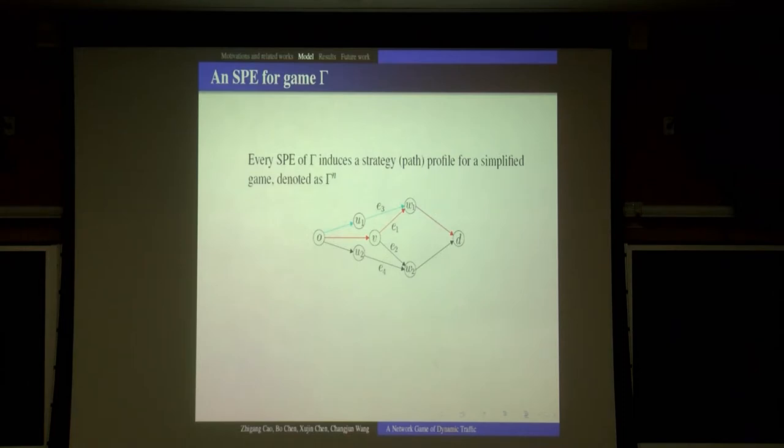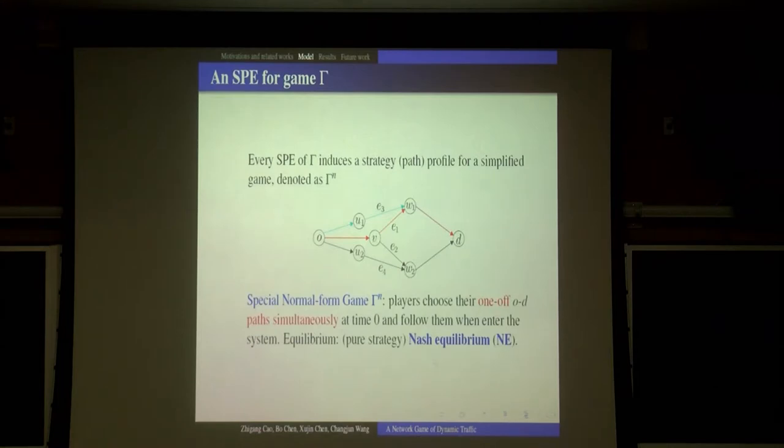Even though the SPE strategy can be quite complex, finally they will induce a path profile. So we also consider a very simplified normal form game, Gamma N. In this game, all players will choose one of their OD paths simultaneously at the very start. When they enter the system, they will follow the path they choose, and the equilibrium is a Nash equilibrium.